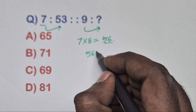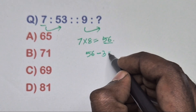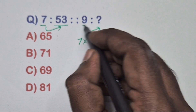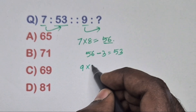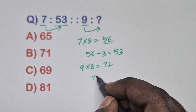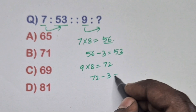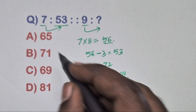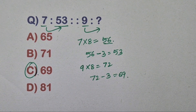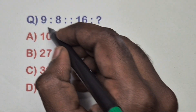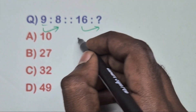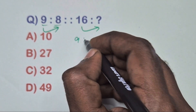Take 9 × 8 = 72, then 72 − 3 = 69. So option C is the correct answer. Find the relation between this pair of questions.